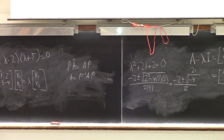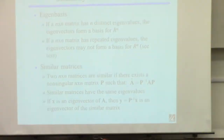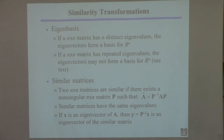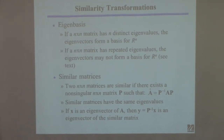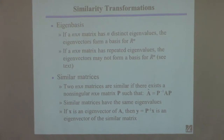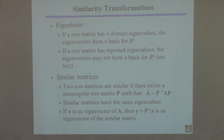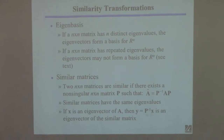If you have two similar matrices, they're going to have the same eigenvalues — I state this without proving it. If you know the eigenvalues of matrix A, you know the eigenvalues of matrix A-hat because they're similar. And if you have the eigenvectors of matrix A, you can easily find the eigenvectors of A-hat: if you compute Y by taking P inverse times X, that'll be an eigenvector of A-hat.